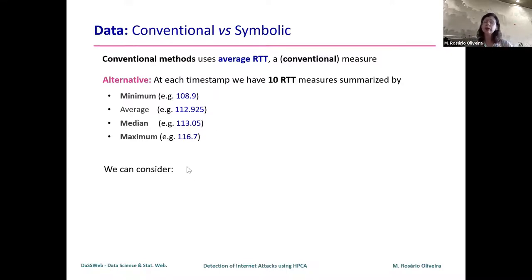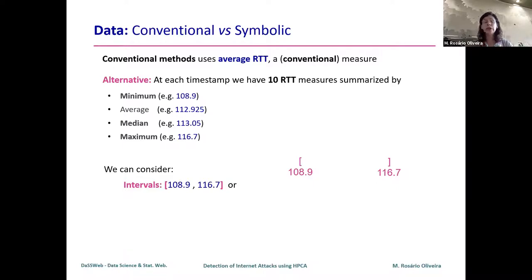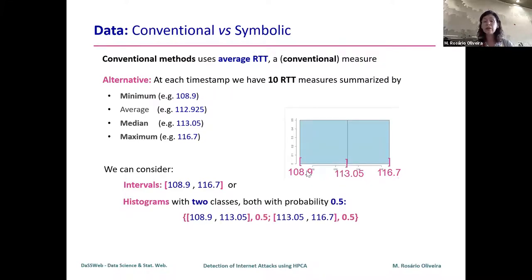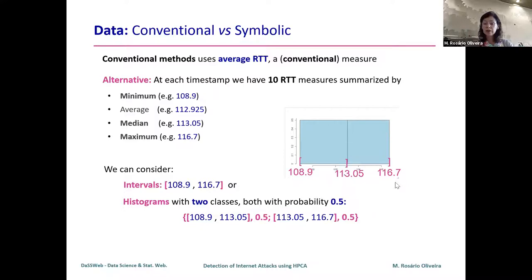We can try to take a better or alternative way to condense and work with this information. We could think about an interval saying these 10 measurements go between this value and that one, or we can do something slightly different: 50% of the observations are between the minimum and the median, and another 50% between the median and the maximum. This gives us the simplest histogram we can think of, and instead of the average, we are going to use this kind of structure.